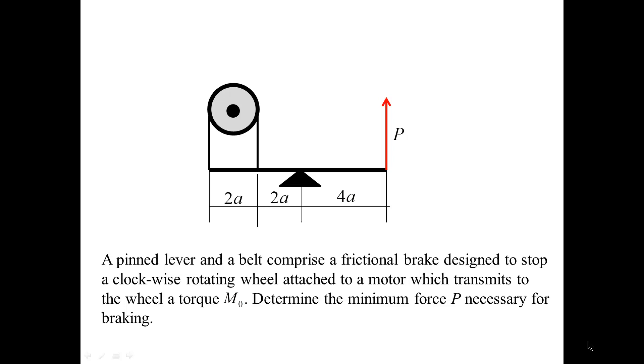In this problem, we analyze a frictional brake. The brake is designed to stop a clockwise rotating wheel. The rotational action is induced by a motor which transmits to the wheel a torque equal to M0. Our task is to determine the minimal force P for brake.